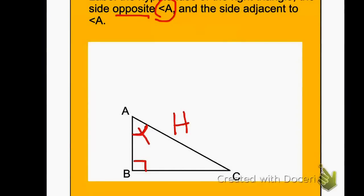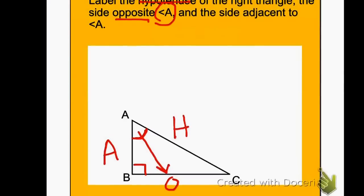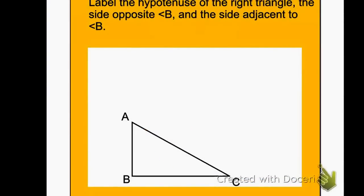If I look at angle A and go across the triangle, it points to the opposite side, so I'm going to label that with an O. The adjacent side is the side that's touching or beside — adjacent to — angle A, so I'm going to label that with an A. So: H for hypotenuse, O for opposite, and A for adjacent.